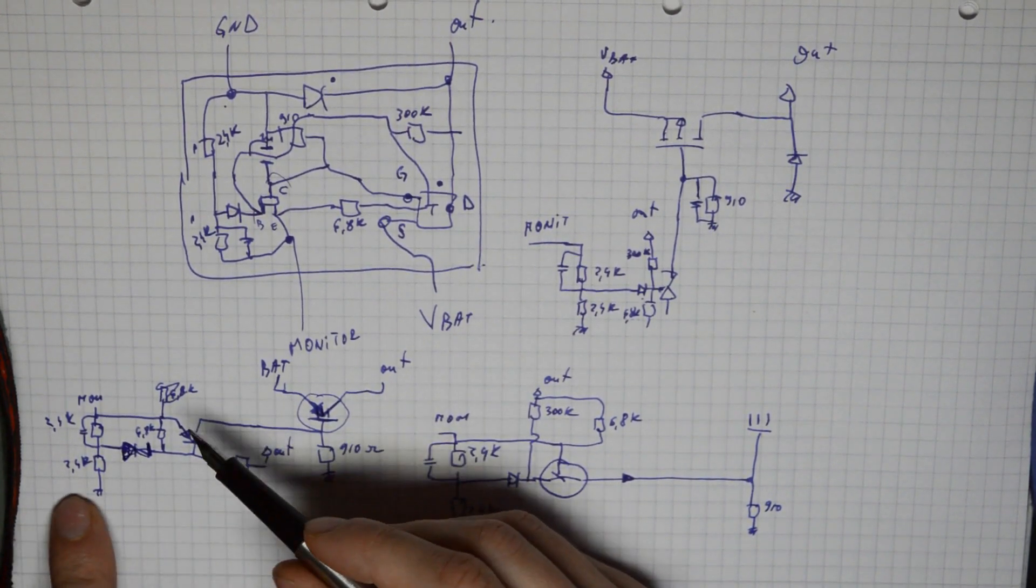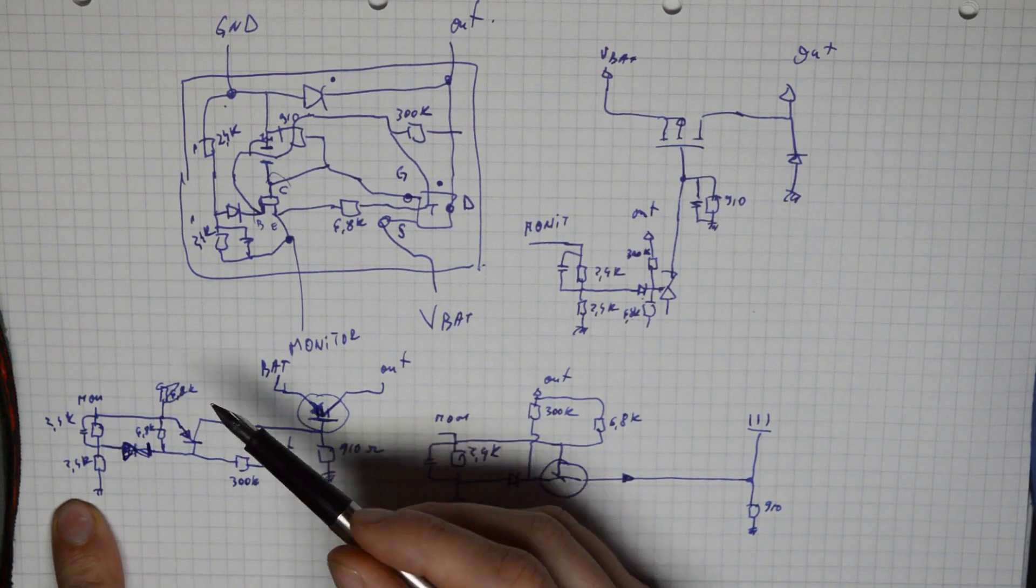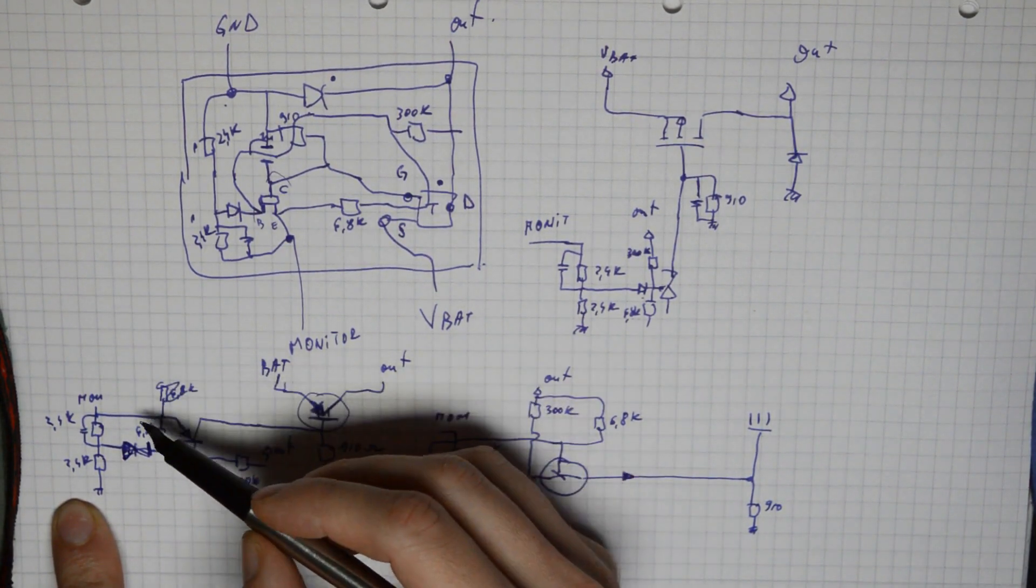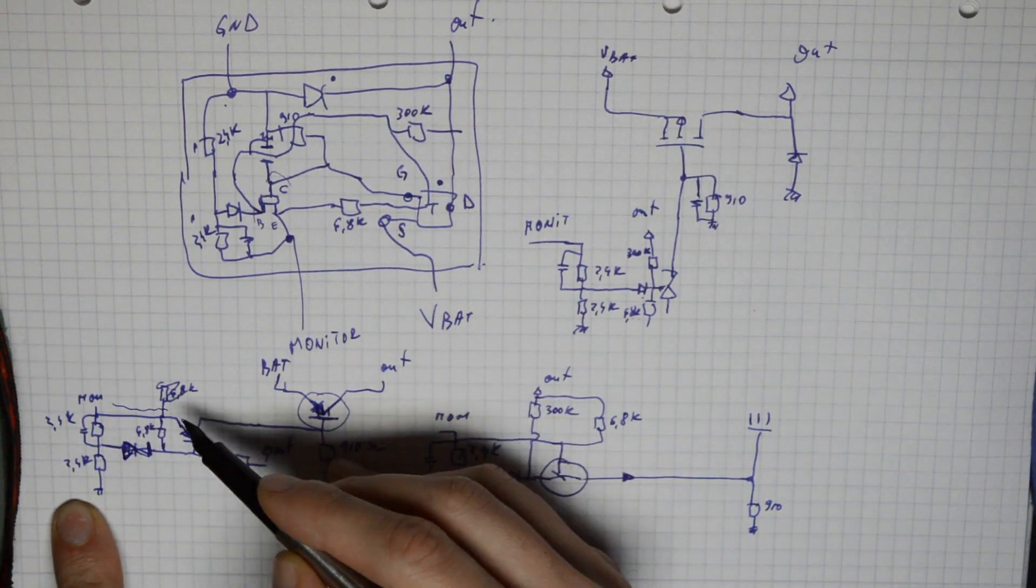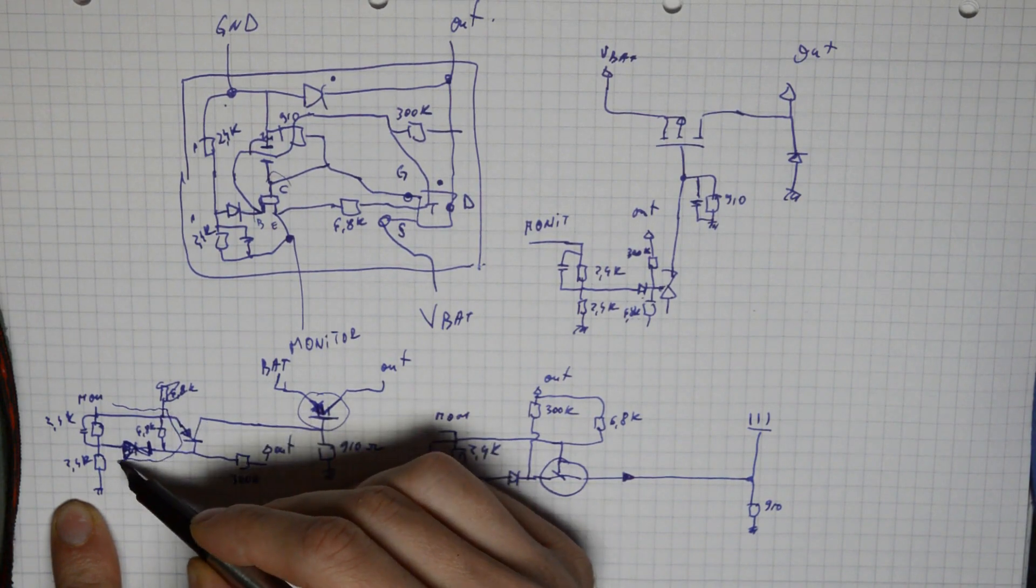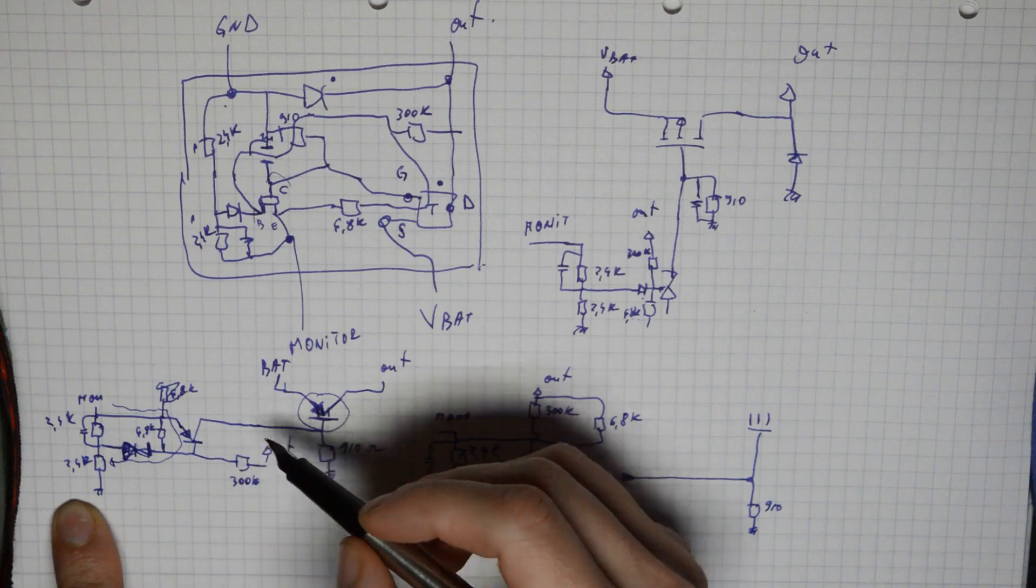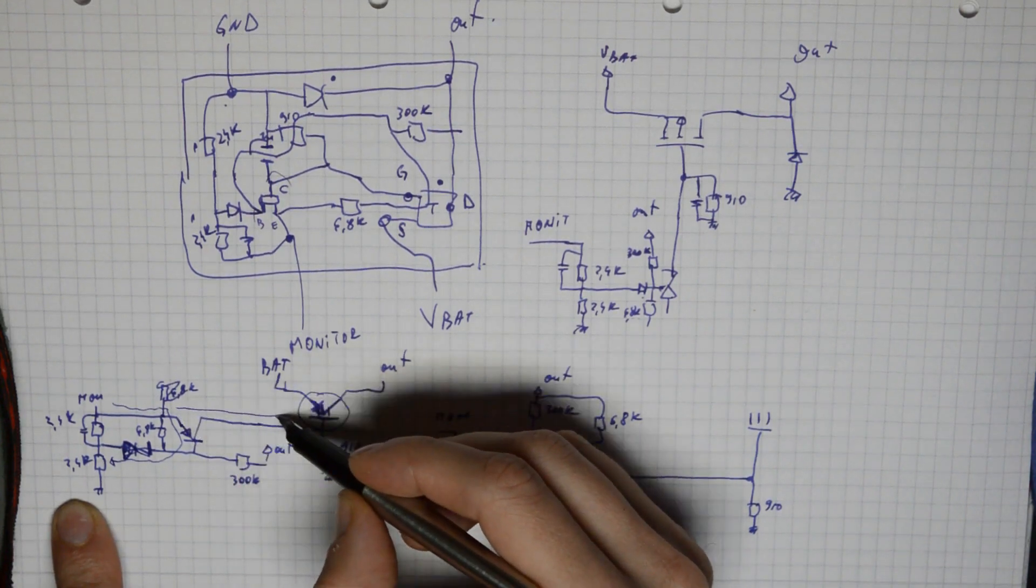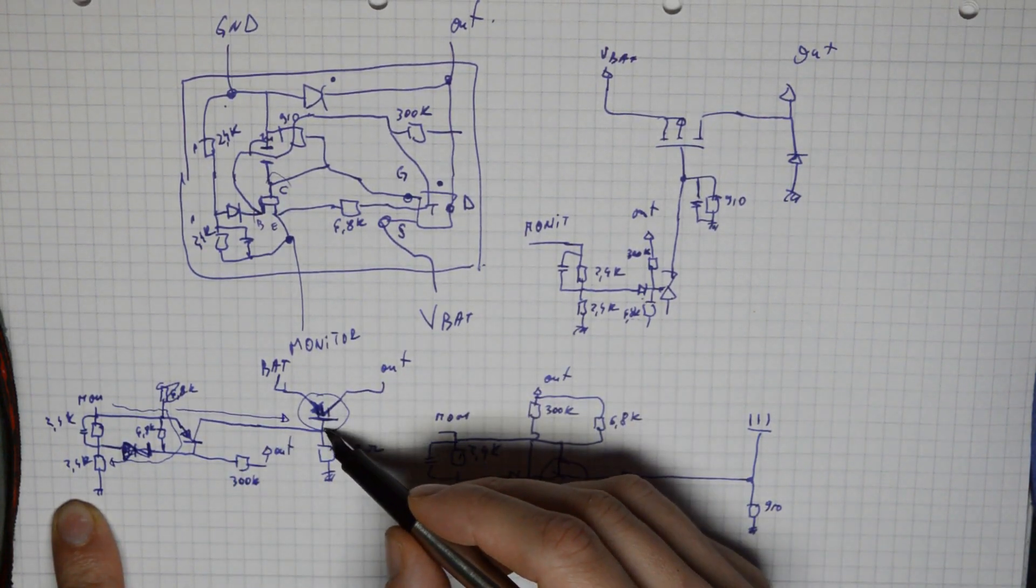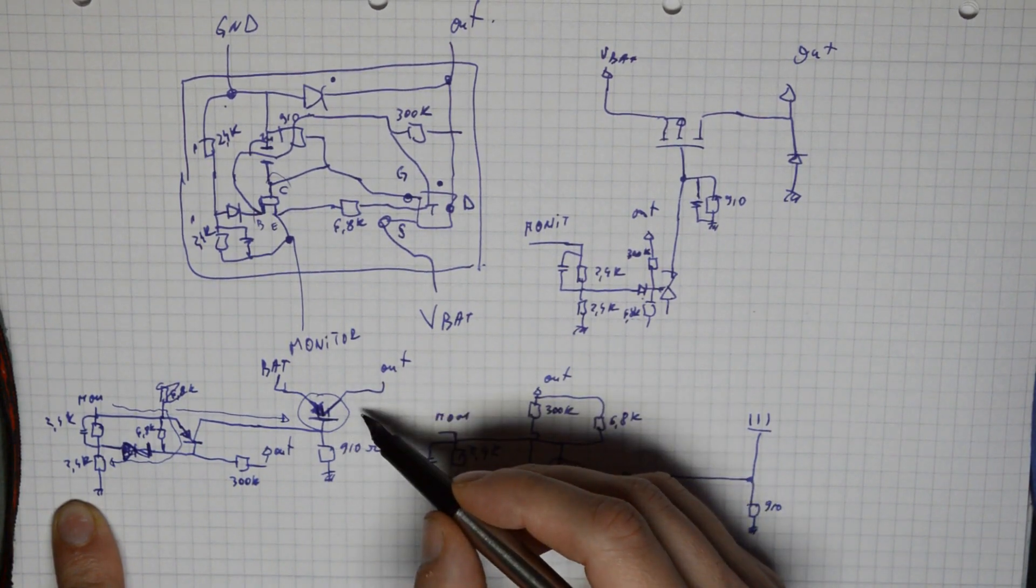When our voltage monitor reaches a certain threshold, high enough voltage, we will have current flowing through our PNP transistor, through the zener to this voltage divider. This will switch on our second PNP transistor, which will drive our base to a high voltage, switching the whole circuit off.